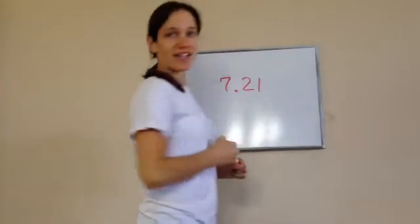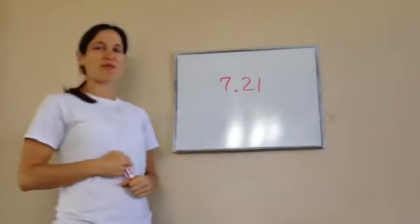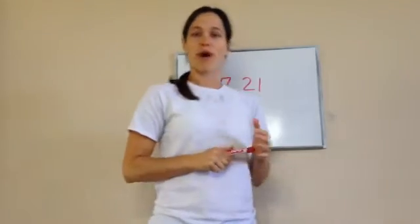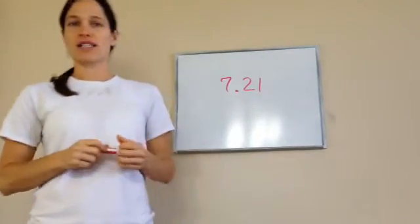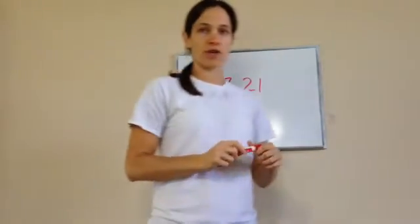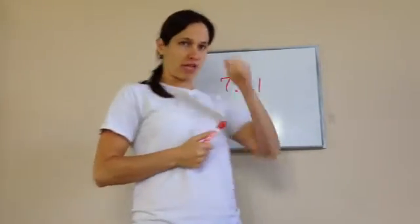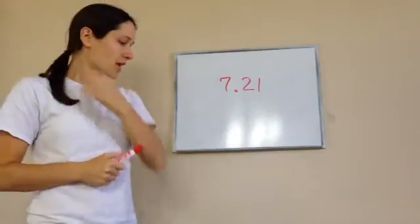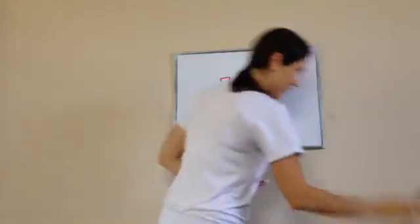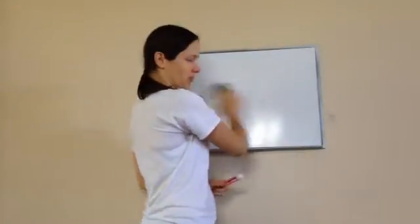All right, 7th grade, lesson 21. This is on prime and composite numbers, and then also we're learning about prime factorization. So let's talk about prime and composite numbers.